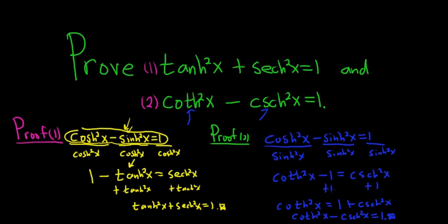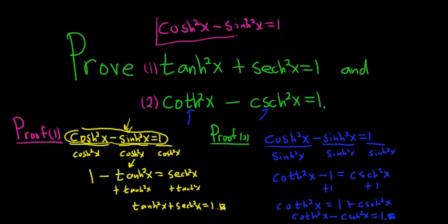These weren't the most elegant proofs, but the point is if you're ever in a situation where you have to come up with these identities, just recall that hyperbolic cosine squared of x minus hyperbolic sine squared of x is equal to 1. From that one identity, you can derive the others. I hope this video has been helpful. That's it.